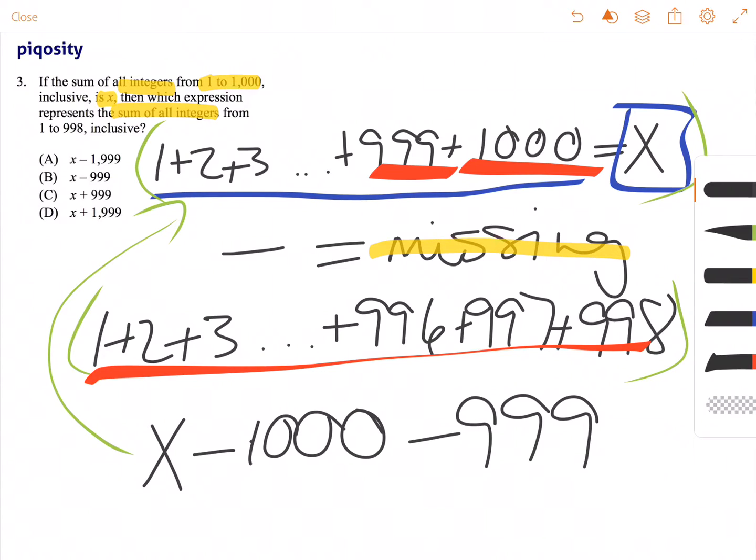Then if you simplify this down, it becomes x minus 1,999, which is answer choice A.